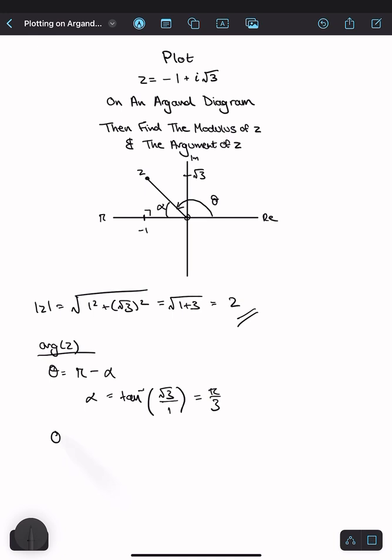So that means that theta is pi minus pi by 3, which is 2 pi by 3. Therefore, the argument of z is 2 pi by 3. And that's your answer.